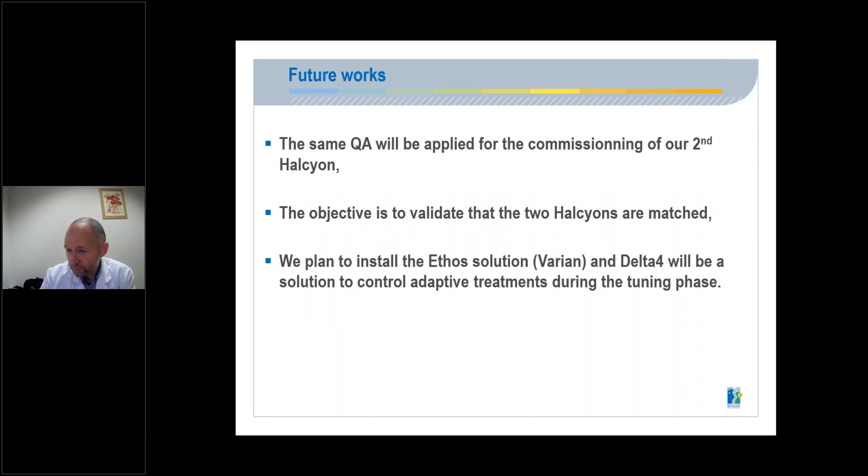The future works. The same QA will be applied for the commissioning of our second Halcyon. The objective is to validate that the two Halcyons are matched. So, we plan to install the ETHOS solution, and delta-4 will be a solution to control adaptive treatments during the tuning phase.